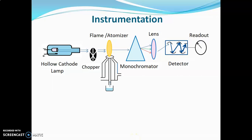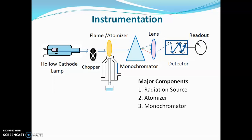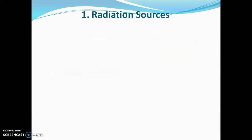The major components of this spectrometer are: radiation source, atomizer, monochromator, detector, and readout system. Now we will see each one in detail.